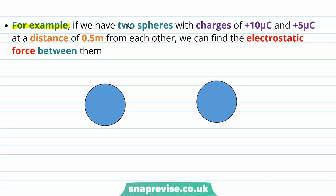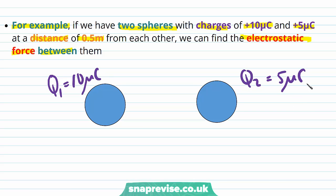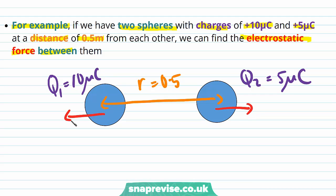For example, if we have two spheres with charges of plus 10 microcoulombs and plus 5 microcoulombs at a distance of 0.5 metres from each other, we can find the electrostatic force between them. One sphere has a charge of 10 microcoulombs and the other has a charge of 5 microcoulombs, separated by a distance of 0.5 metres. Because both charges are positive, this electrostatic force is going to be repulsive, acting to move the spheres away from each other.